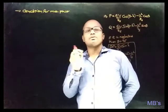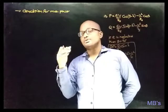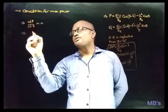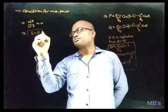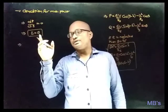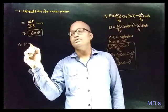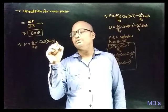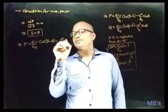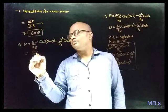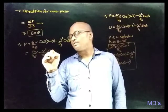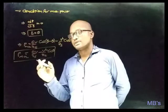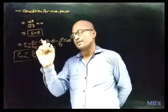The condition for maximum power output is that the load angle δ equals the impedance angle θ. Substituting δ = θ into the power equation: P_max equals (EV/Zs) × cos(0) minus (V²/Zs) × cos θ, which simplifies to EV/Zs minus (V²/Zs) × cos θ. The maximum power output condition is: load angle equals impedance angle.